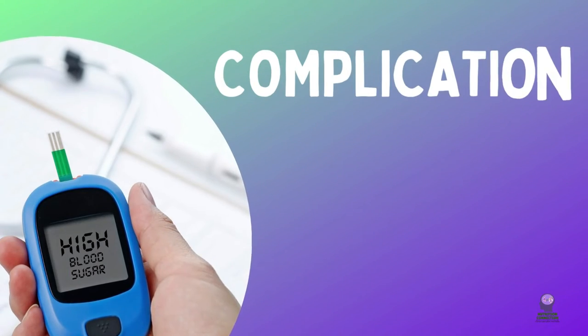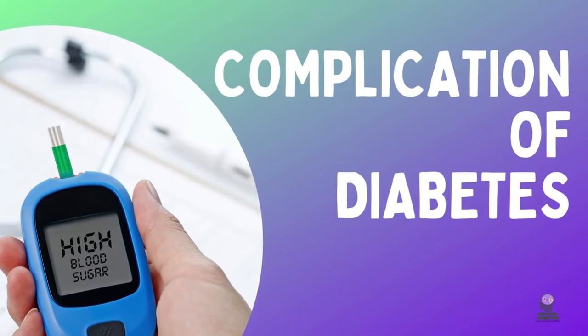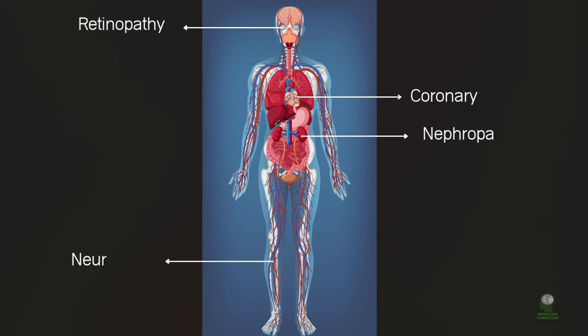Sustained hyperglycemia in diabetes can lead to vascular complications. Retinopathy, nephropathy, neuropathy, and cardiovascular diseases are some of the complications of diabetes.